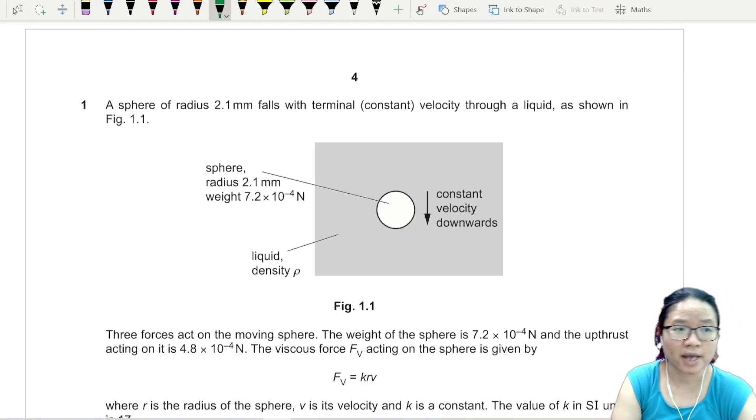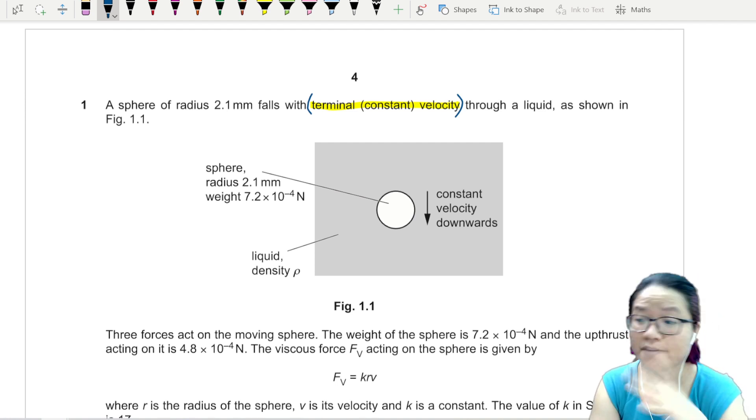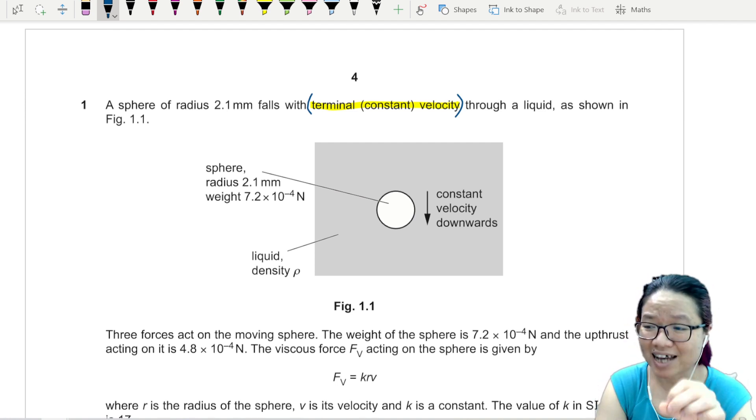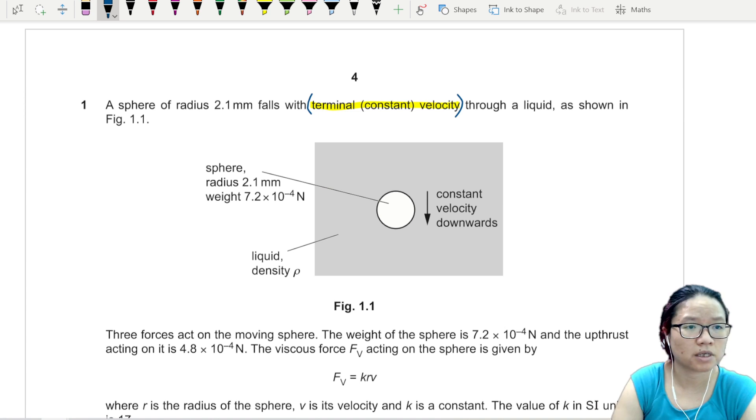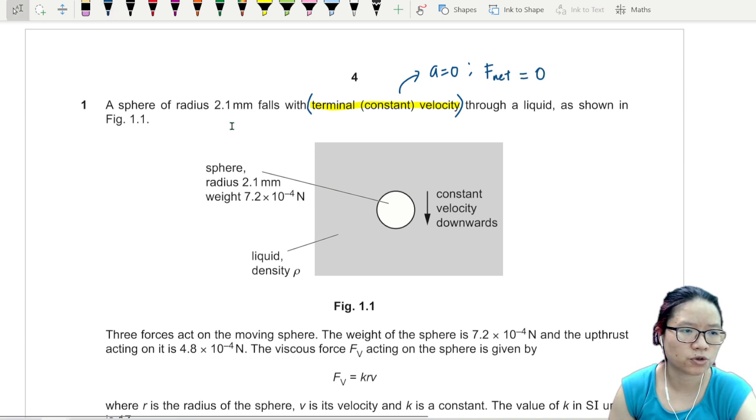A sphere of radius 2.1 mm falls with terminal or constant velocity through a liquid as shown in figure 1.1. As previously mentioned, this is Cambridge or CIE's favorite thing to ask in AS - the idea of changing drag force and terminal velocity.